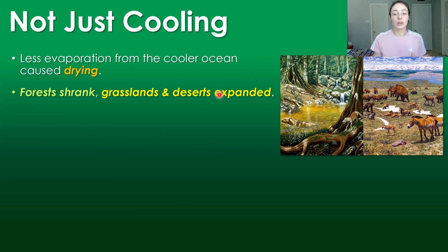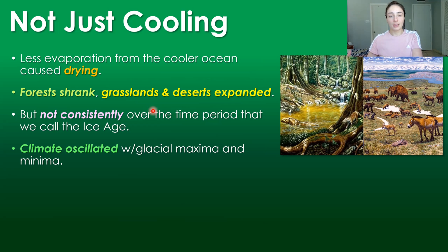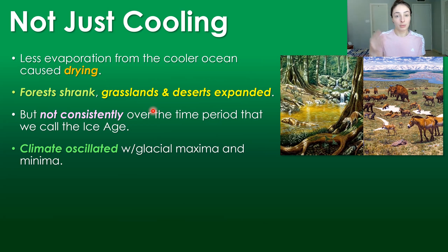Now there are still obviously forests, but it's nothing like it was during the early Paleogene or early Cenozoic. But these changes weren't consistent — the drying, shrinking of forests, and expansion of grasslands and deserts wasn't happening in a unidirectional kind of way throughout the ice age, or basically from around 30 million years ago to now.